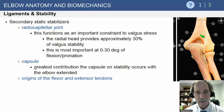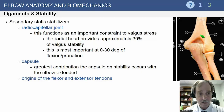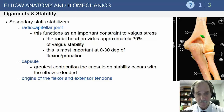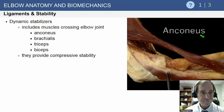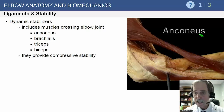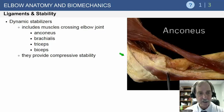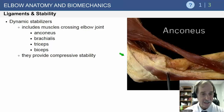Secondary stabilizers include the radial capitellar joint, which functions as an important constraint to valgus stress, and the capsule, which contributes to stability with the elbow fully extended. Dynamic stabilizers include the anconeus, which runs across the joint and is often used to supplement stability, as well as the brachialis, triceps, and biceps, which provide compressive stability and dynamic force to the joint.